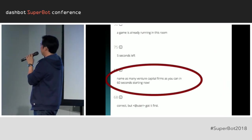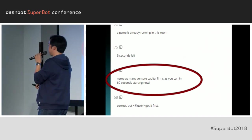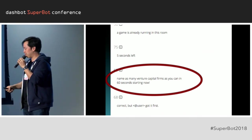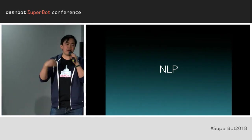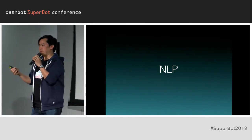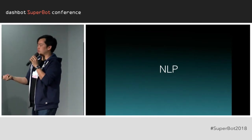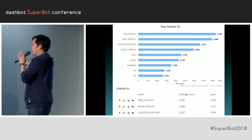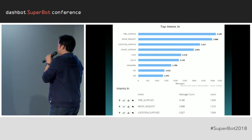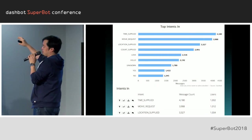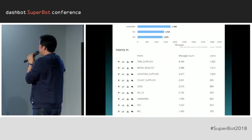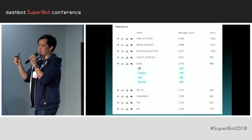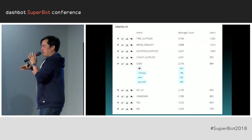What I love is, as I look in, this is the one they really hate: 'Name as many venture capital firms as you can in 60 seconds.' They really, really hated that game — but we still keep it in because it works really well for VC meetings. Many of you are using amazing NLP platforms that turn words and concepts into intents and entities. With DashBot, you can see all of the intents actually being processed by your bot — here you can see a whole bunch of generalized intents coming in.